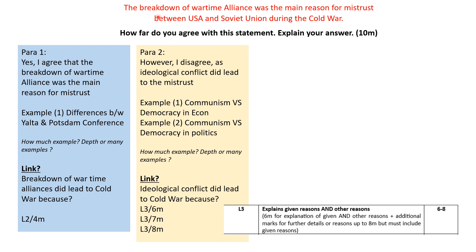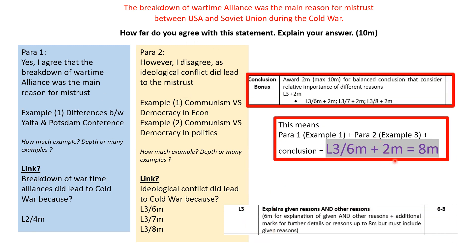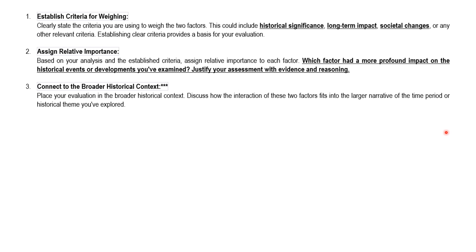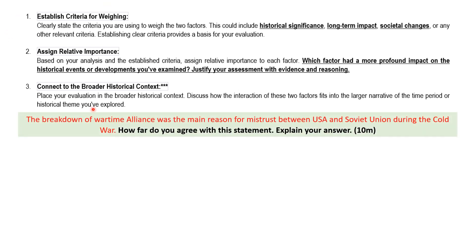Six marks is for explanation of the given factor — the breakdown of wartime alliance — and other reasons, which is ideology. Your plus two marks come if you attempt a conclusion after that.